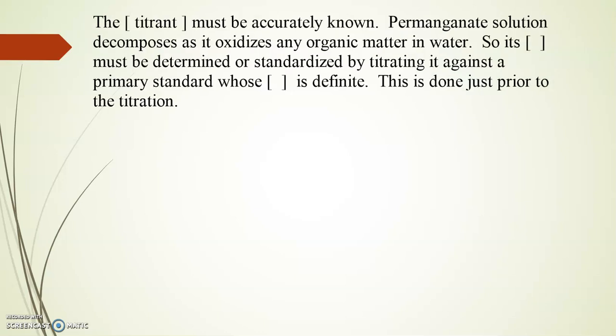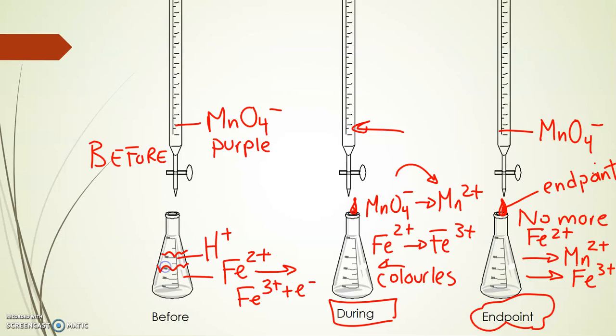Now we have to know the concentration of the titrant. And the problem with the permanganate ion is that it decomposes. So its concentration must be determined or standardized by titrating it against a primary standard. And this is done prior to our titration. The point of this whole titration was to find the concentration of permanganate ion, so that we can use that determined concentration to find the concentration of anything else that we will explore in the lab.